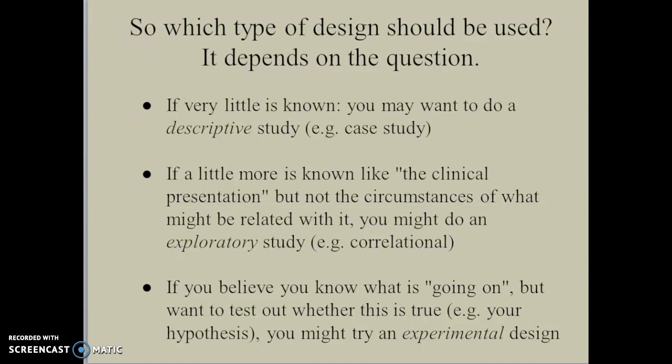But if you believe you know what's going on, what the phenomena is, and you want to test out whether or not certain underlying factors might affect the final outcome, then you might want to do something known as an experimental design, which tests a specific hypothesis given as a declarative statement of what you believe will happen, and then you can see whether or not this is actually the case. So again, the answer really depends upon what is known already about the topic and what it is you personally want to find out about the clinical question — that tells you which type of research design you should be looking at.